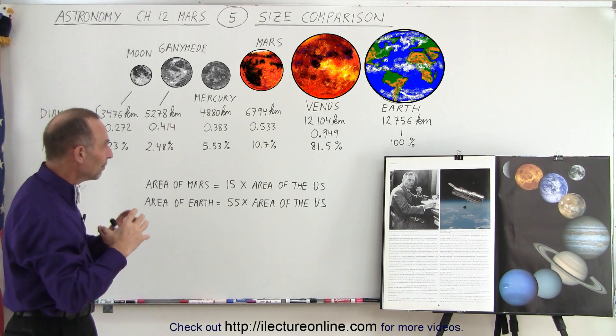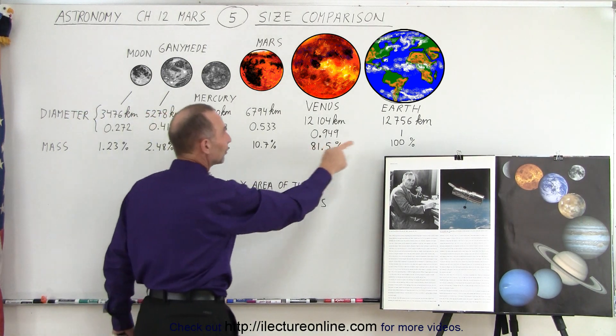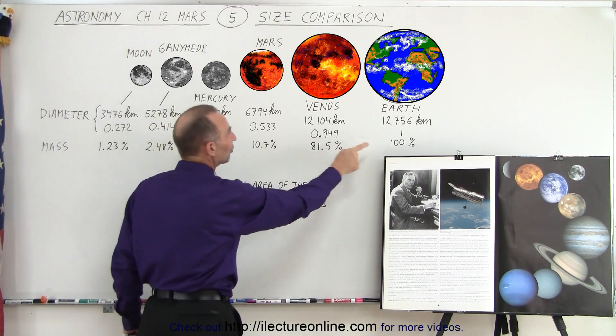So mass-wise, Mars is about twice the size of Mercury, but then compared to the Earth, it's only about 10% the mass of Mercury.